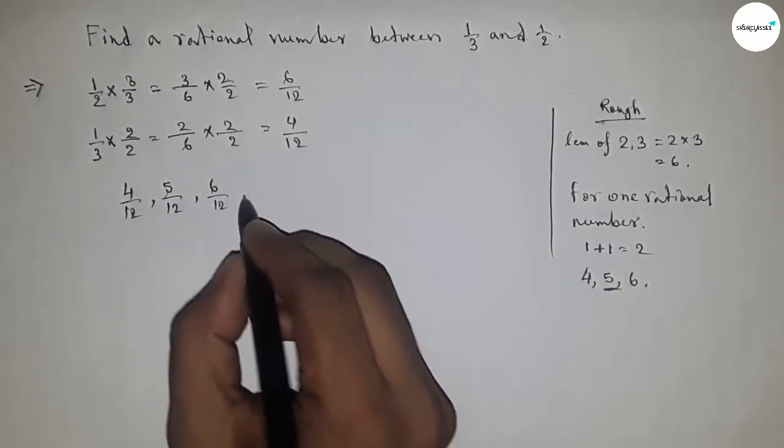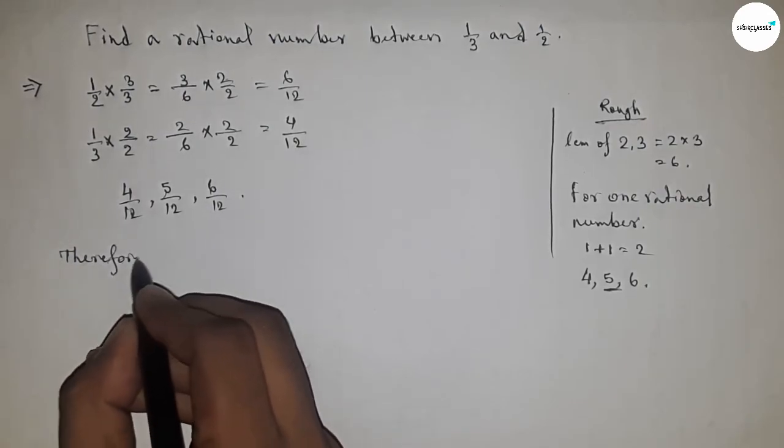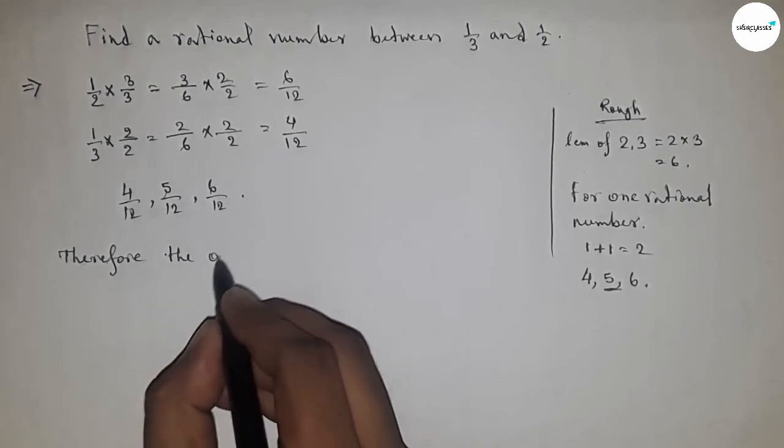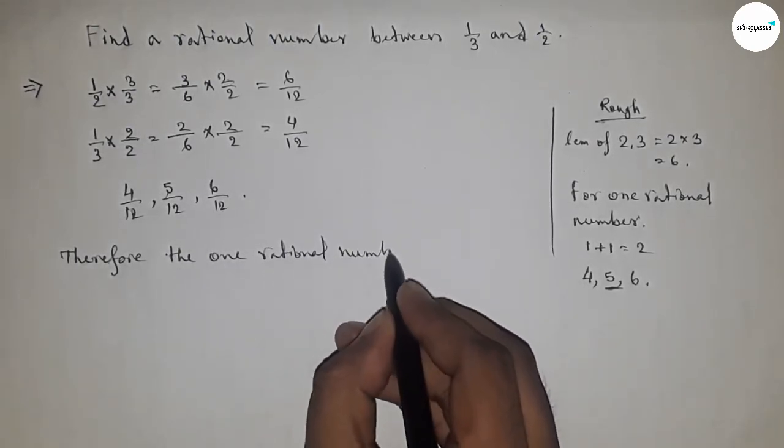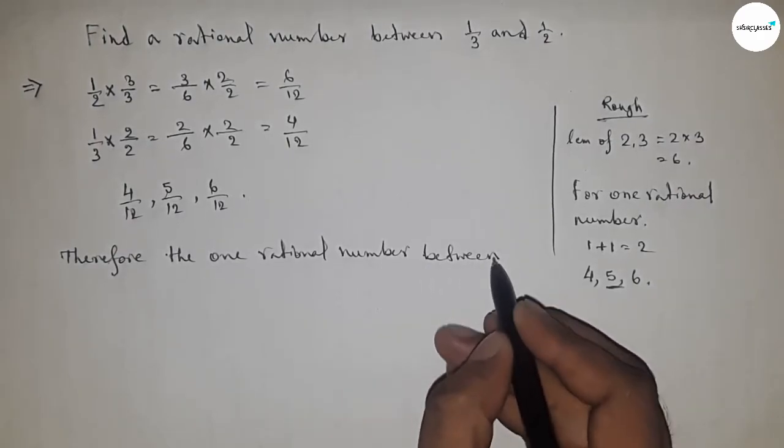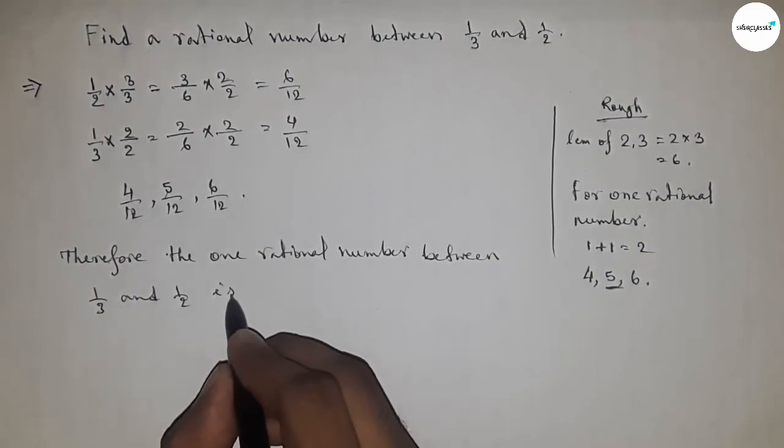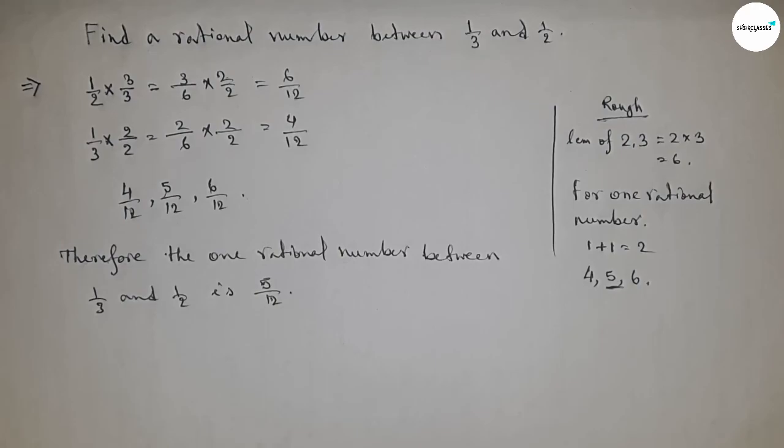Therefore, the one rational number between 1/3 and 1/2 is 5/12. So this is the process to find a rational number between 1/3 and 1/2. That's all.